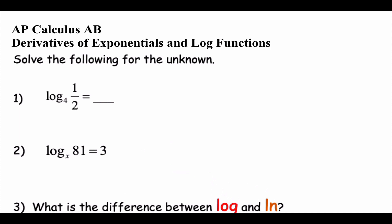We use logs when we don't know the exponent — when the exponent is the unknown. When I teach logs in Math 3, I teach what's called the loop trick. The loop trick changes a log to an exponent. We start with the base — say 4 — then do the loop from one side to the other. So the log question is asking which power would make it true.